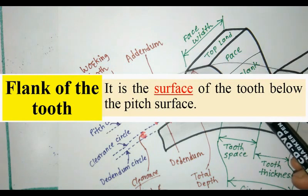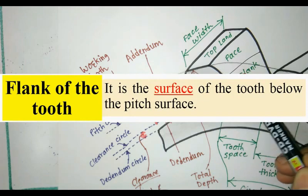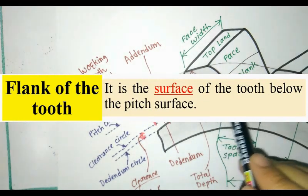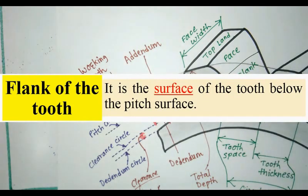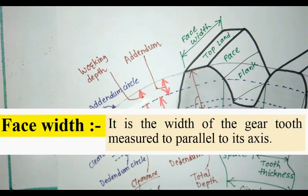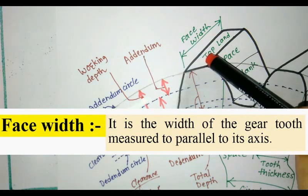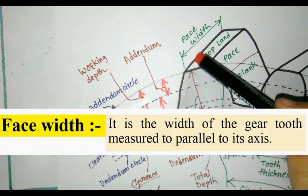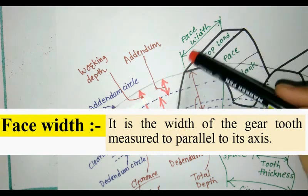Next is the flank of tooth. It is the surface of the tooth below the P surface. Next one is face width. Face width is the width of the gear tooth measured parallel to its axis.